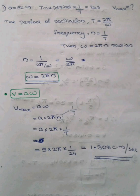For Simple Harmonic Motion, we have to look at the equations. The period of oscillation is T, and the equation is T equals 2π divided by ω. The frequency equation is n equals 1 by T. Substituting frequency as 1 by T, then 1 over (2π/ω), we get frequency n is equal to ω divided by 2π.